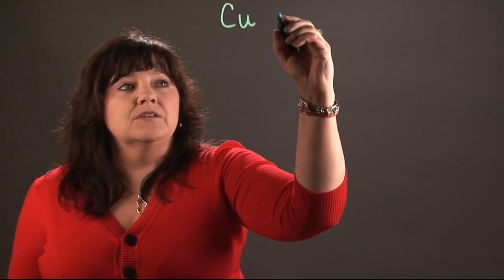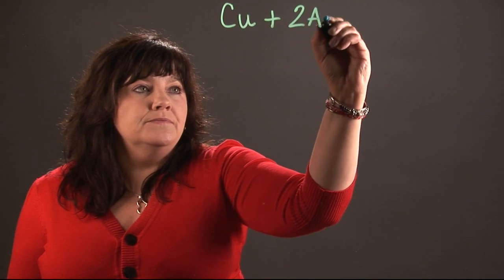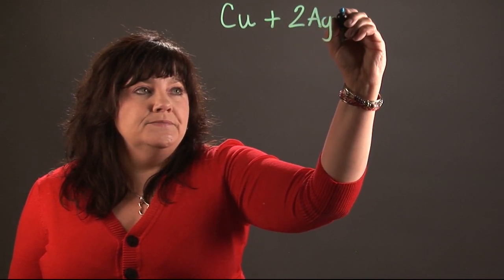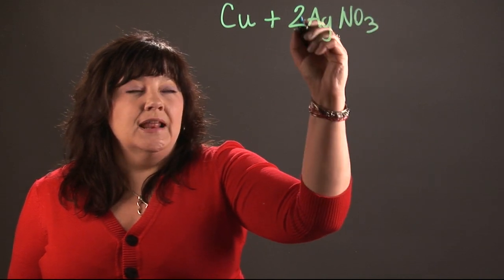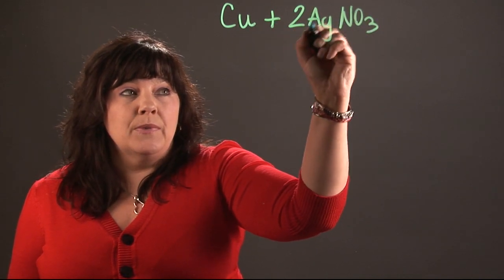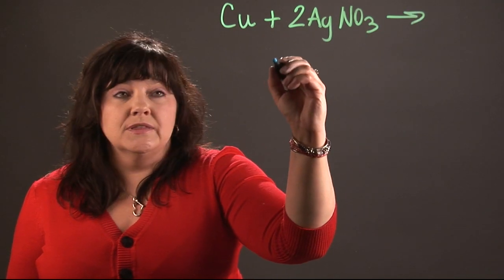So an equation that contains copper and silver might look something like this. You might have a substance of copper that's combining with silver nitrate. And it's actually one copper is going to combine with two molecules of the silver nitrate. And that's going to yield something that looks like this.